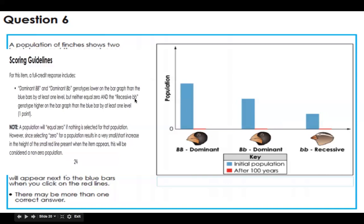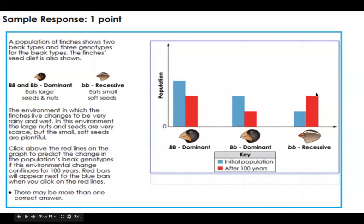The recessive, lowercase b, lowercase b, genotype higher on the bar graph than the blue by at least one level. Remember, we did that too.